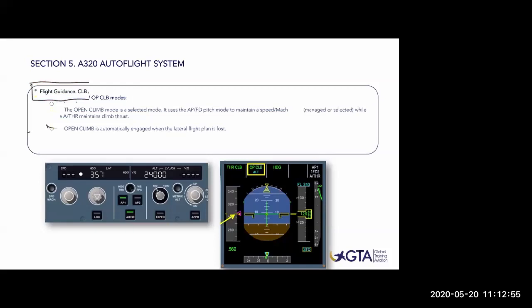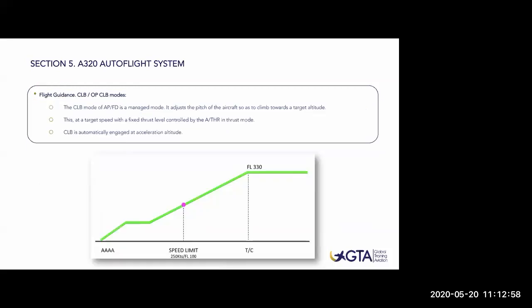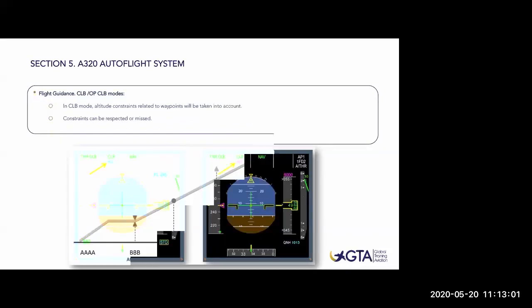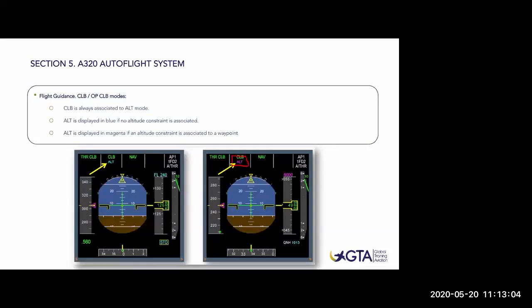You can see open climb on the FMA. And we have these magenta items on the display - those magenta indications are constraints. In that case you see 6,000 feet magenta, which represents an altitude constraint to be complied with during the flight.